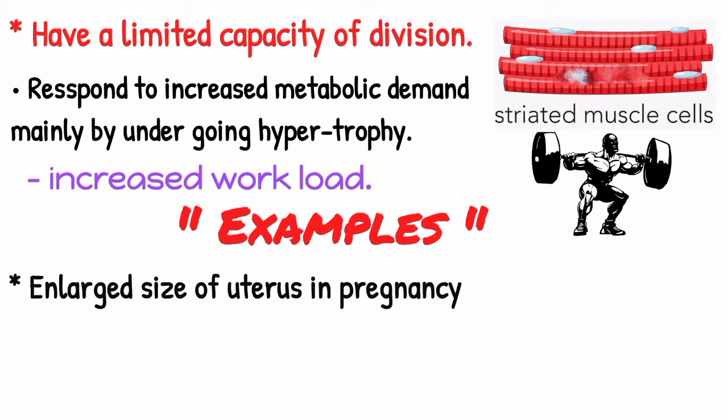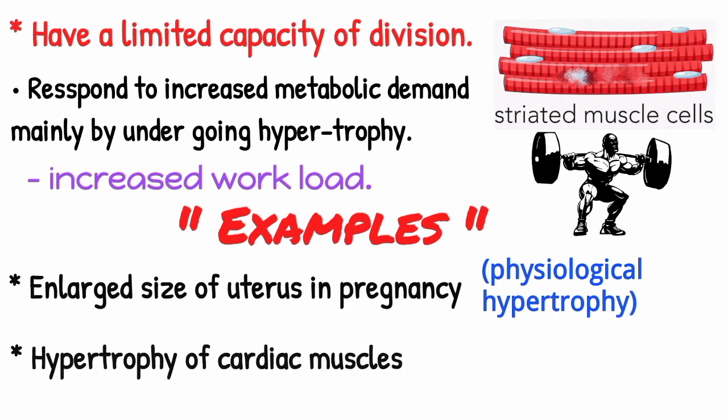Enlarged size of uterus in pregnancy is an excellent example of physiological hypertrophy. Hypertrophy of cardiac muscles that may occur in a number of cardiovascular diseases is a best example of pathological hypertrophy.